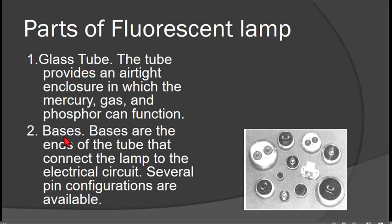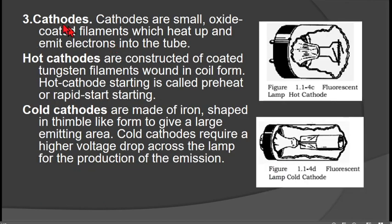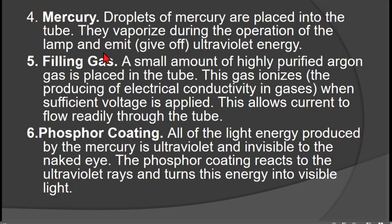The fluorescent lamp parts include the bases, the hot and cold cathodes, and mercury droplets. Mercury droplets are placed into the tube and vaporize during operation, emitting ultraviolet energy. A small amount of highly purified argon gas is also placed in the tube; this gas ionizes and produces electrical conductivity when sufficient voltage is applied, allowing current to flow readily through the tube. The phosphor coating then reacts to the ultraviolet rays and converts the energy into visible white light.